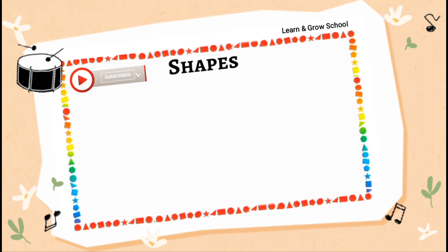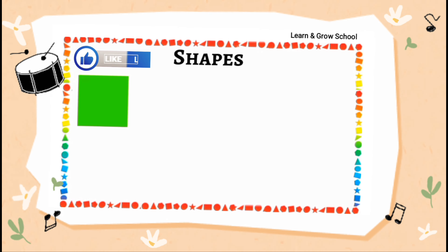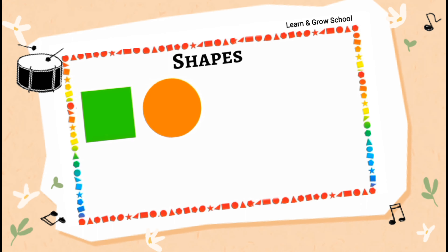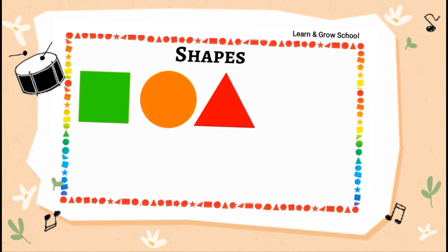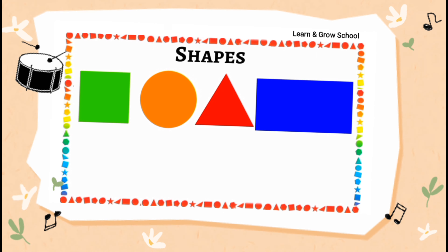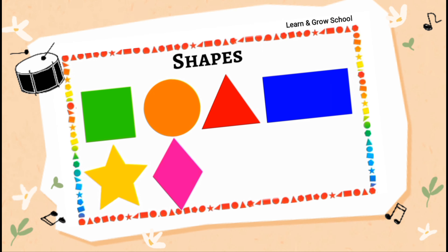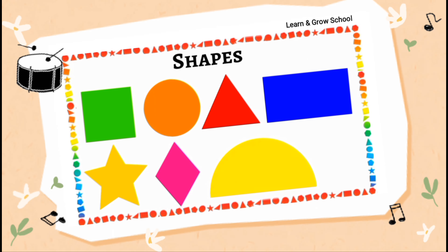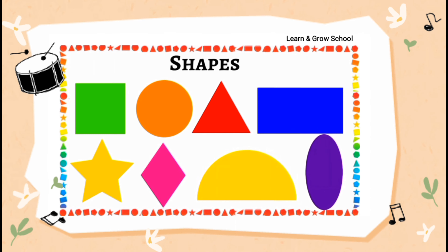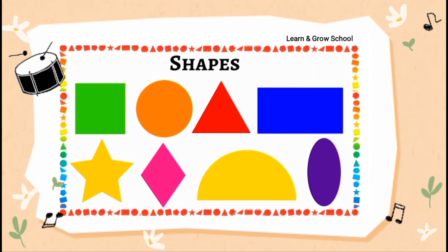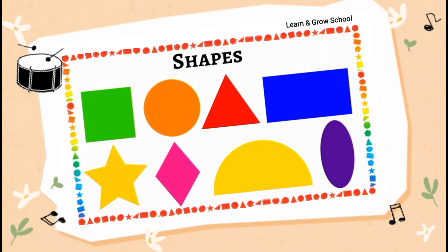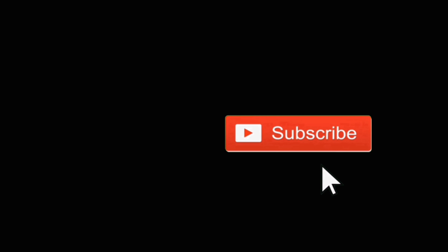Now let's quickly revise the shapes we've learned: square, circle, triangle, rectangle, star, diamond, semicircle and oval. Please like this video and subscribe to our channel to get more videos. Thank you.